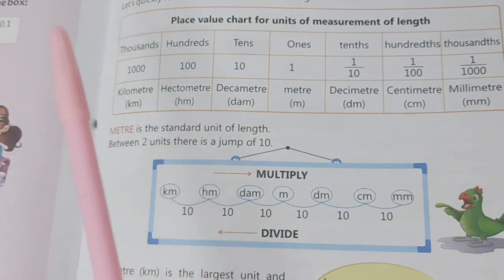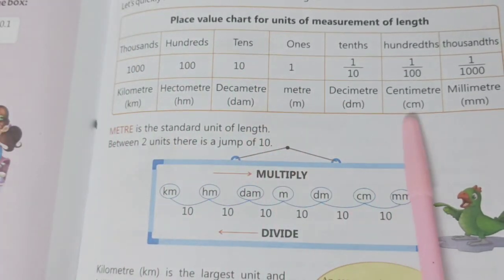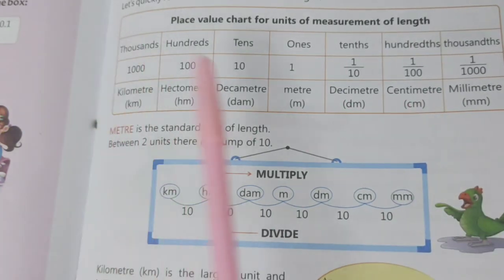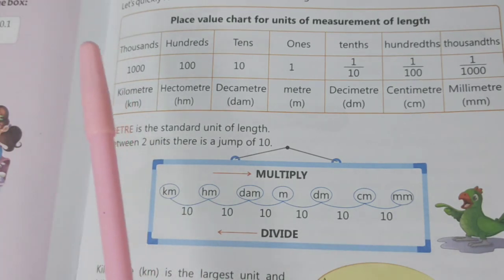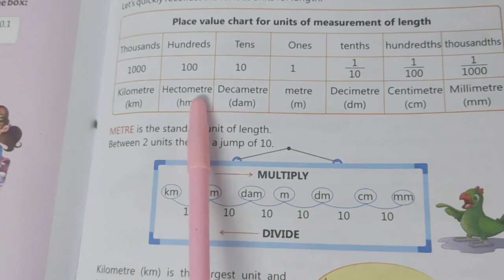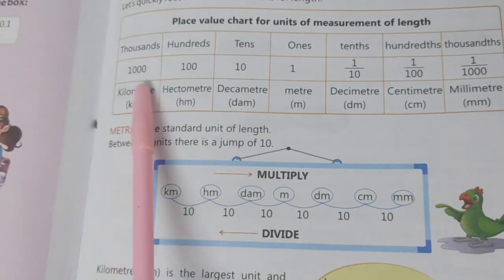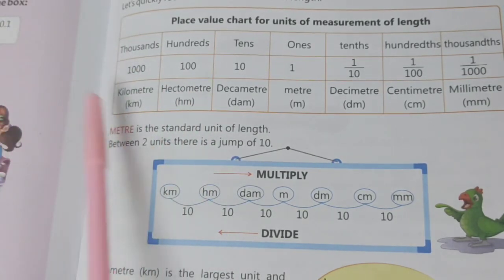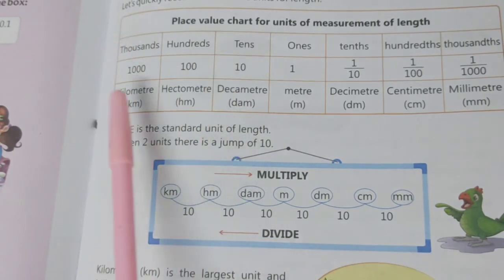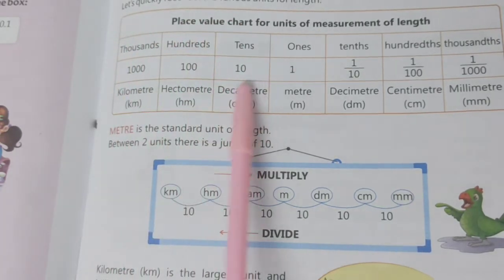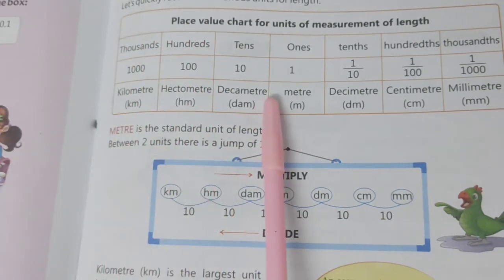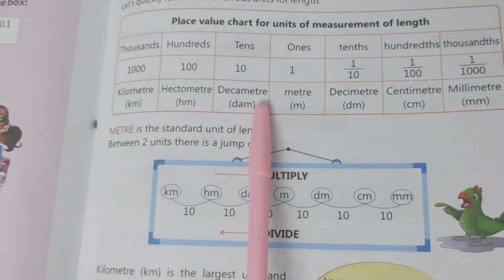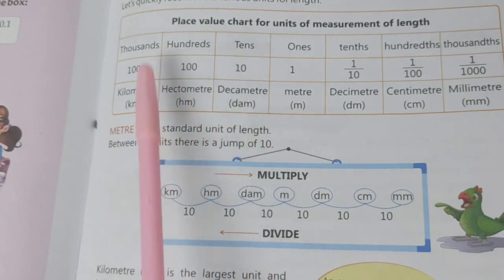The seven units are kilometer, hectometer, decameter, meter, decimeter, centimeter, and millimeter. Each lower one is decreased by 10 times from the higher one. Like kilometer is 10 times greater than hectometer, or hectometer is 10 times lesser than kilometer. If we are converting from kilometer to decameter, it is two jumps, so kilometer is 100 times greater than decameter, or decameter is 100 times less than kilometer.